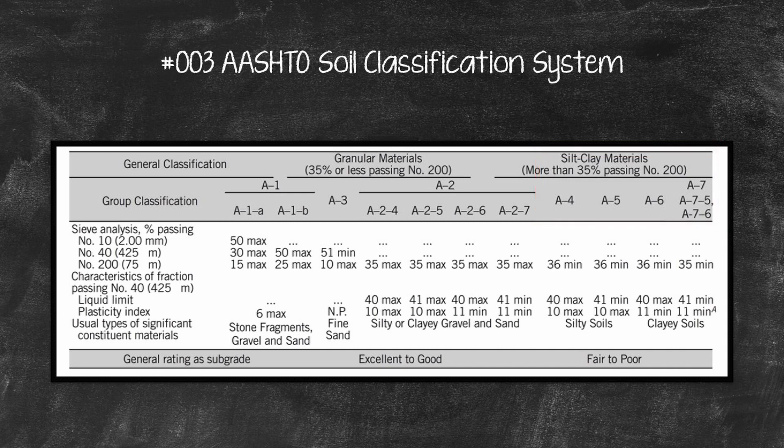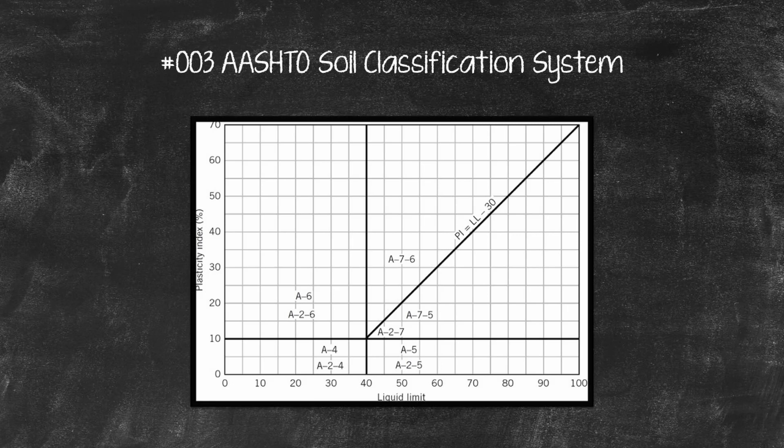To classify a soil according to the AASHTO table, the test data are applied from left to right. By the process of elimination, the first group from the left into which the test data will fit is the correct classification. Silt and clay soils are located within the plasticity chart, as shown in this figure.